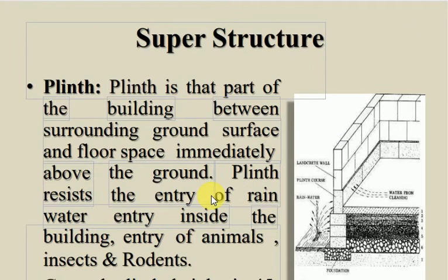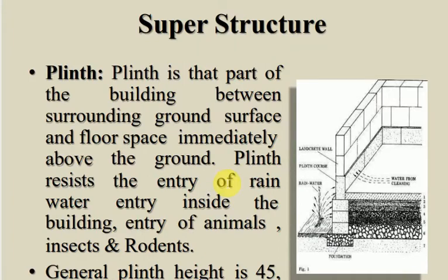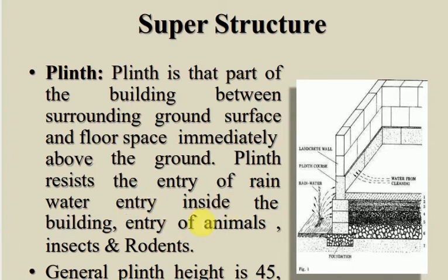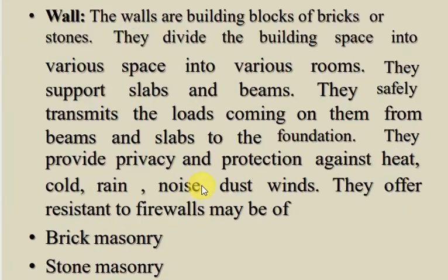Now the superstructure components. Plinth is that part of the building between the surrounding ground surface and the floor space immediately above the ground. The plinth resists the entry of rainwater, animals, insects, and rodents inside the building. Generally the plinth height is 45, 60, 75, 91, or 120 cm.